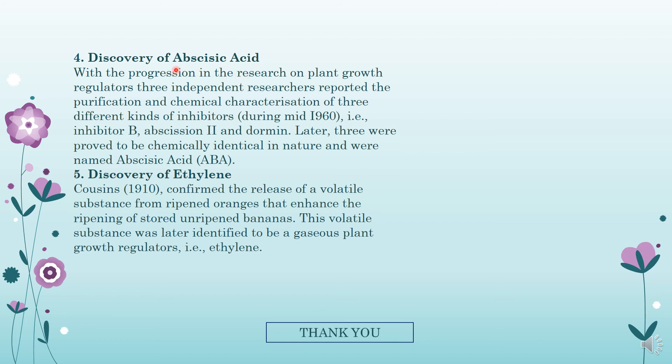When the abscisic acid quantity increases in the plant body, abscission of the plant takes place. That is, premature falling of the leaves can take place as well as premature falling of the buds of the plant can take place. If that type of reaction is seen, it can be identified that the abscisic acid production in the plant is higher.